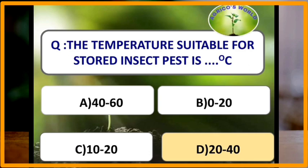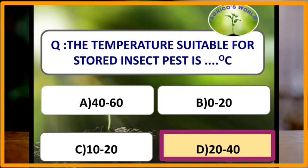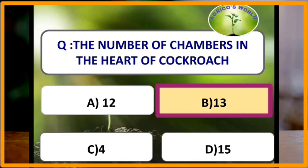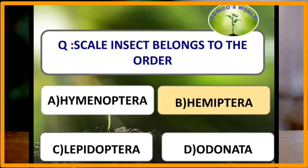The temperature suitable for stored insect pests is 20 to 40 degrees Celsius. The number of chambers in the heart of cockroach is 13. The heart of cockroach has 13 chambers.